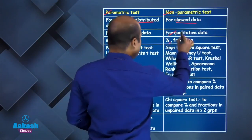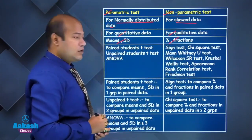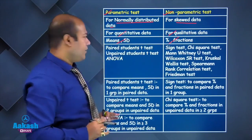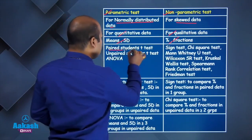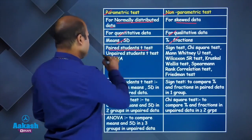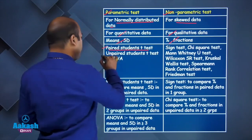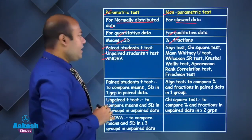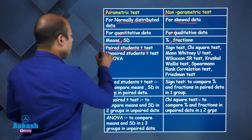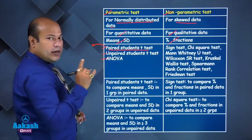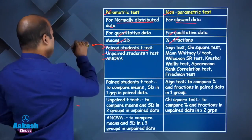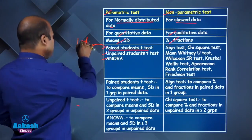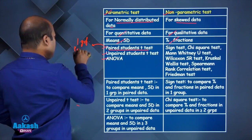Now, what are the types of parametric tests? You have the paired student t-test, the unpaired student t-test, and ANOVA. For the paired student t-test, the criteria are: there will be one group, and there will be paired data.